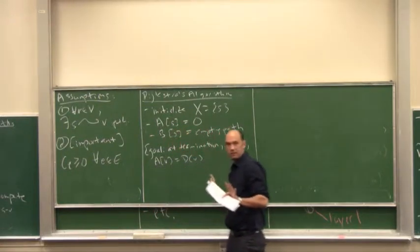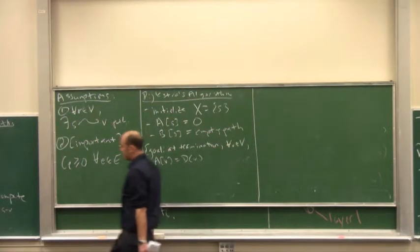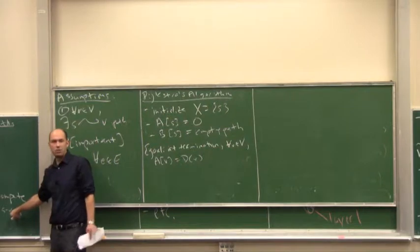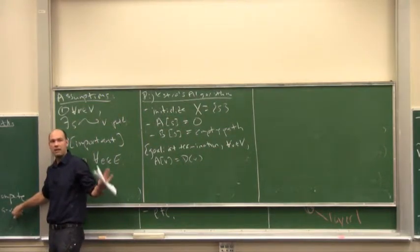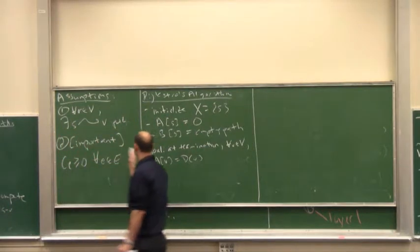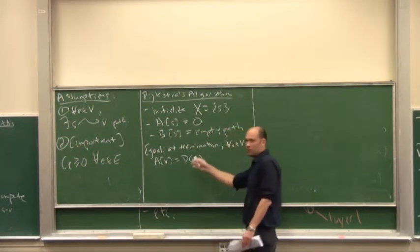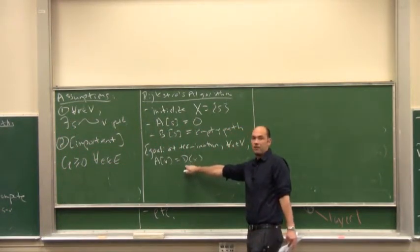Remember, capital D is sort of the ground truth or the correct answer. Capital D is the actual shortest path length from S to V. Capital A is what our algorithm is computing. So this is just saying our shortest path distances are correct, match the ground truth.